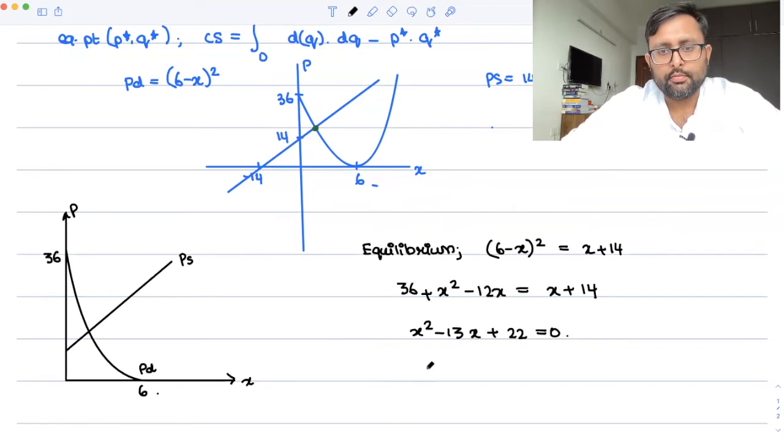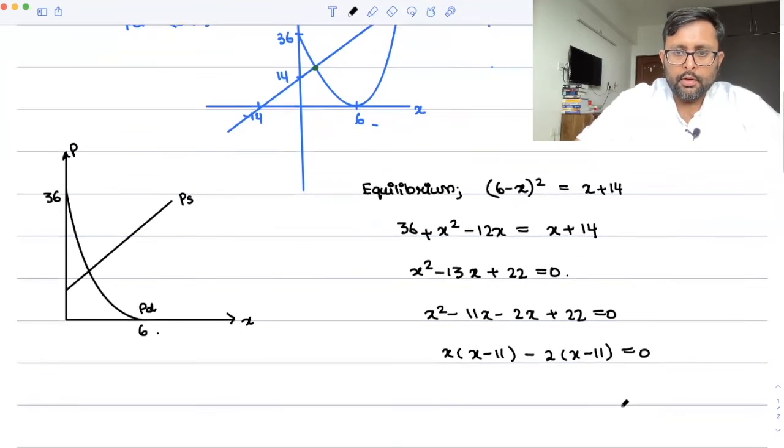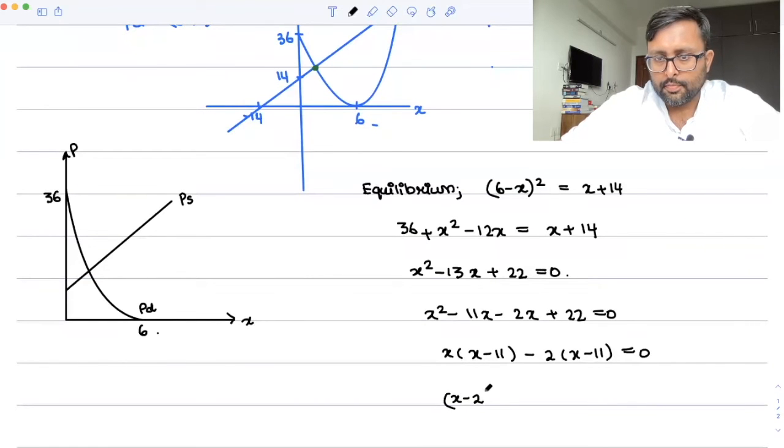This is what you want to do it. So this you can just factorize. Minus 11x minus 2x plus 22. So x minus 2, x minus 11 equals to 0.